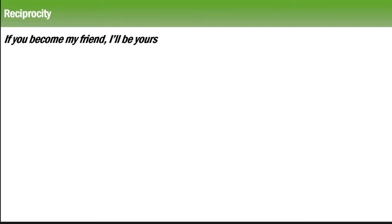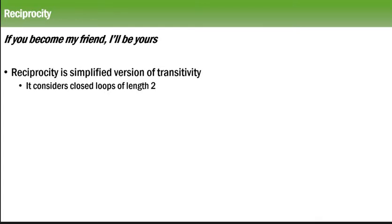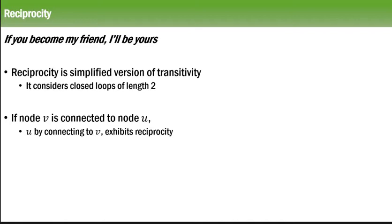Reciprocity is considered as a closed path or closed loop of length 2. If node v is connected to node u, then u by connecting to v exhibits reciprocity. This happens only in a directed graph.